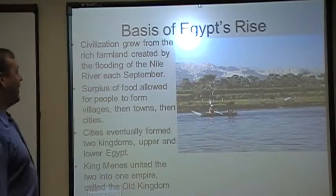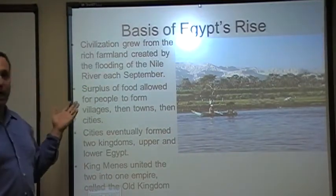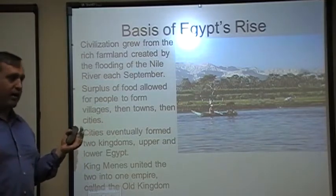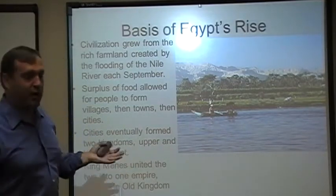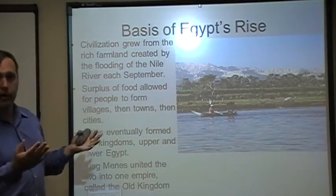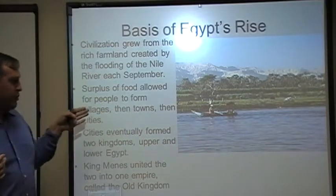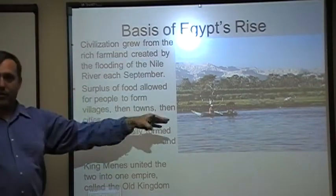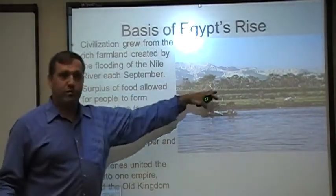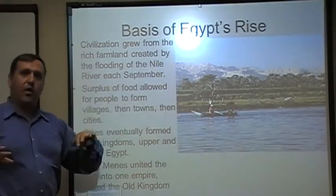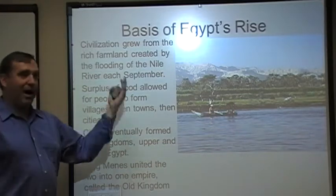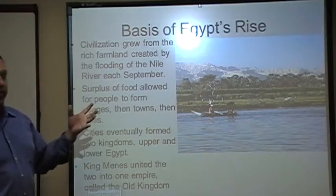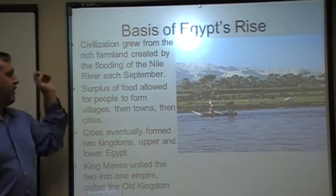The basis of Egypt's rise is going to be this rich farmland created by the flooding of the Nile River every September. Normally we think of floods as something bad — you turn on the news and see people going to the post office in their boat. But flooding at this point was usually a good thing, definitely for the Egyptians. What it did was bring down fresh water that would spill the banks and go out into what would normally be desert, creating a lush, well-watered area. It also brings down soil from the highlands that deposits rich soil that can then be used for farmland — creating an immensity of agricultural surplus.